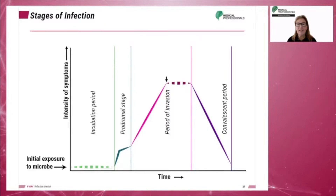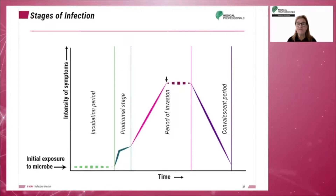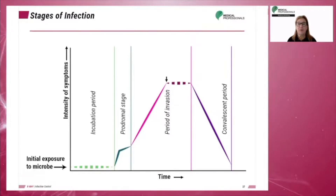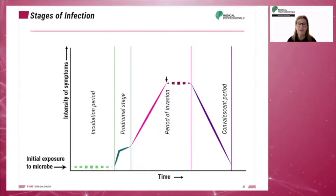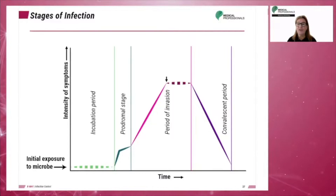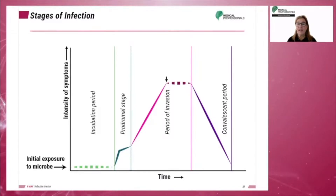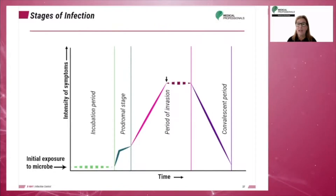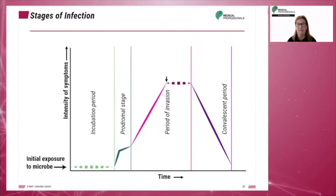During the disease period, the symptoms continue to manifest and the host is communicable. The last stage is the convalescence period. During this stage, the organism may become latent and the disease may still be communicable; however, symptoms may cease to manifest.